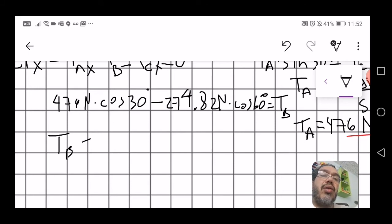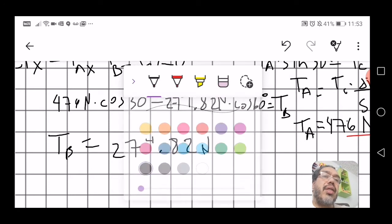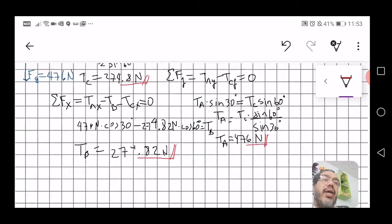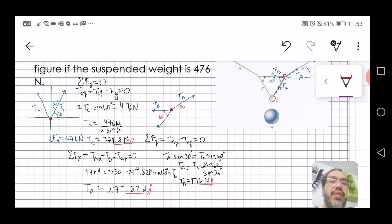Using enough decimals, this happens to be equal to 274.82 newtons. And that's your last answer, the tension in the B string.